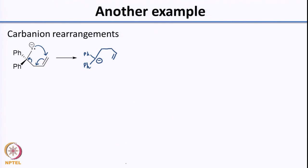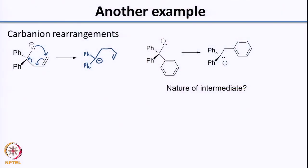What is the driving force for this rearrangement? You have this anion which is formed right next to 2 aromatic rings — that is your driving force, because you are stabilizing the carbanion, similar to what you had studied in the case of carbocations. Whenever you have a rearrangement there should be some reason for the molecule to do it — it would do so only if it finds some advantage in migration. Here is another example where instead of an allylic group, you now have a phenyl group migrating to generate the new carbanion.